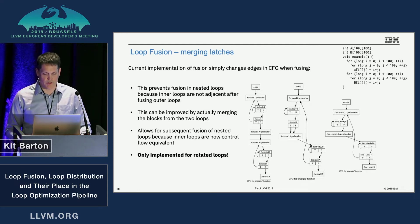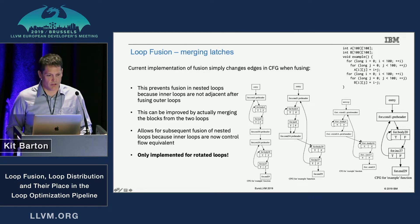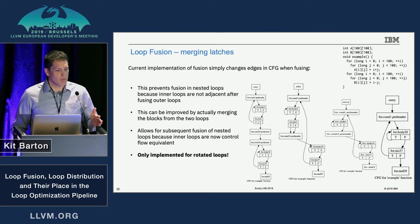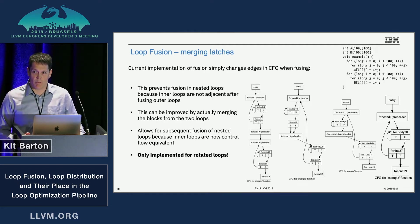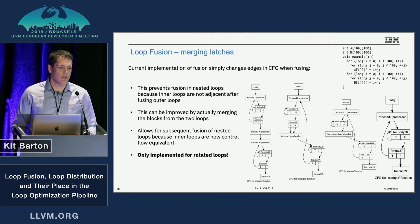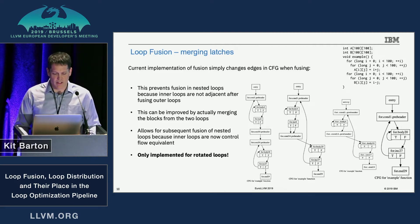The extension we have is to actually merge the latch blocks: we analyze whether it's safe to move the code in the latch blocks and create a single latch block at the end of the fused loop. This makes the inner loops adjacent so we can fuse them to create a single two-level loop nest. We implemented this only on rotated loops since that really simplifies the fusion mechanics.